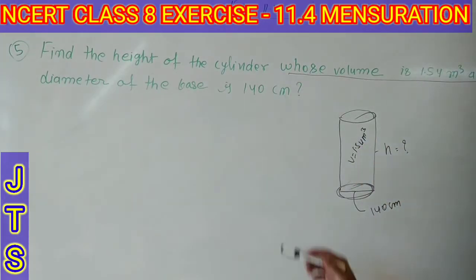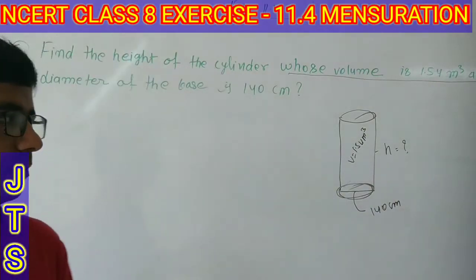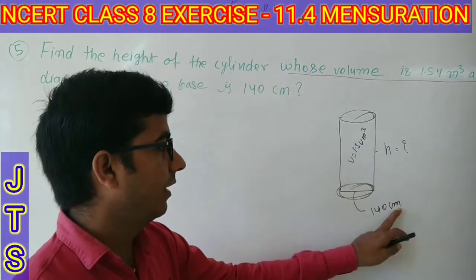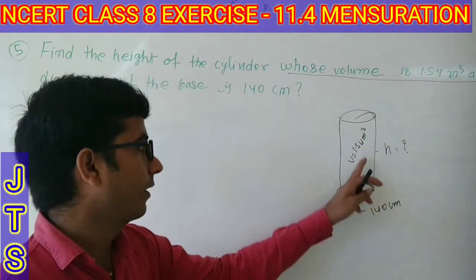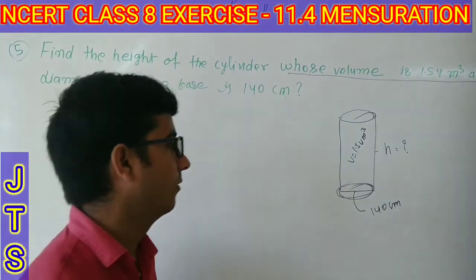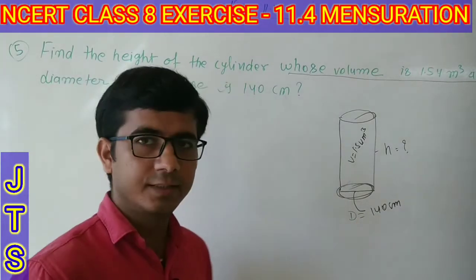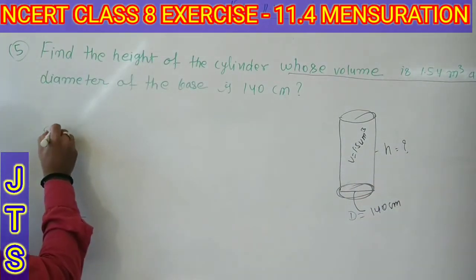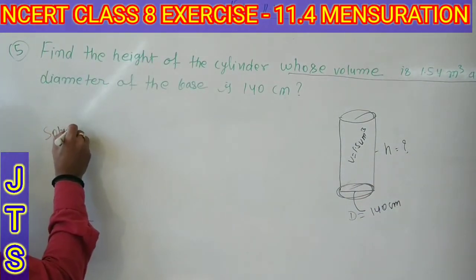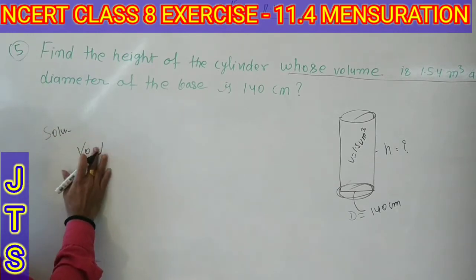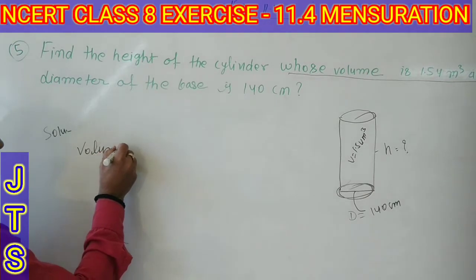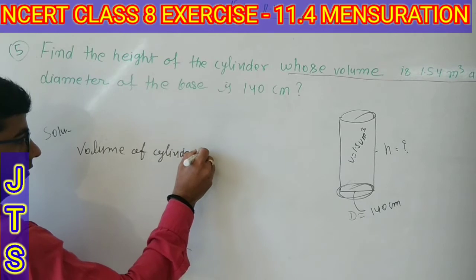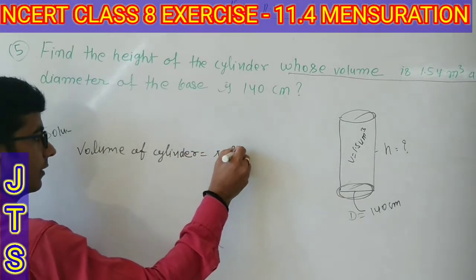You need to find the height of the cylinder. We will see this question. First, note that the volume is in meters and the diameter is in centimeters. If diameter is given, we find radius. So here we can solve it. The volume of cylinder is equal to π r² h.